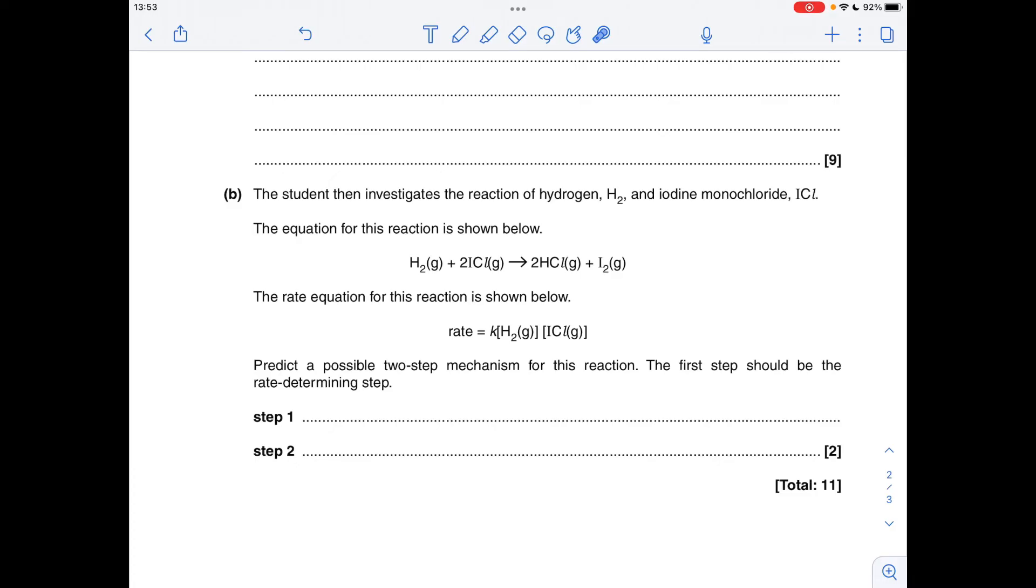And finally we've got to come up with a possible two-step mechanism for this reaction. So we've got the overall equation here and the rate equation there. Now the rate equation is really important because it tells us the species, the particles that react in the rate determining step, which we're told is going to be the first step. Now there's often more than one way to do these things, but everybody must have these in these quantities as the reactants for the rate determining step.